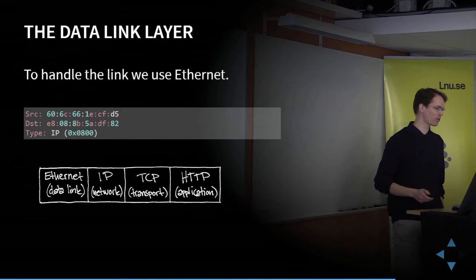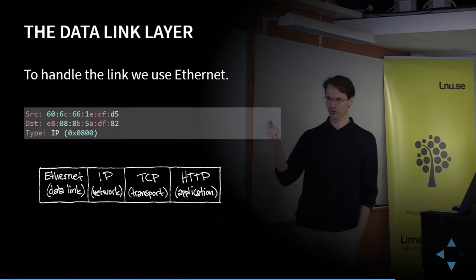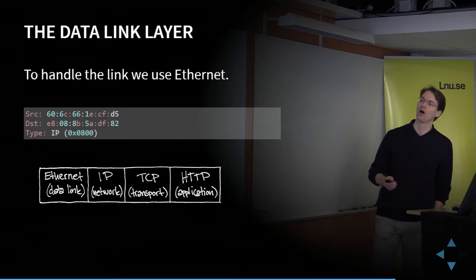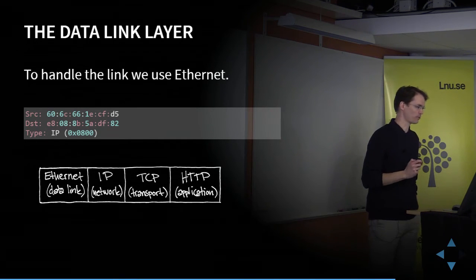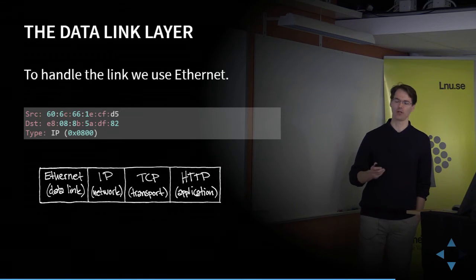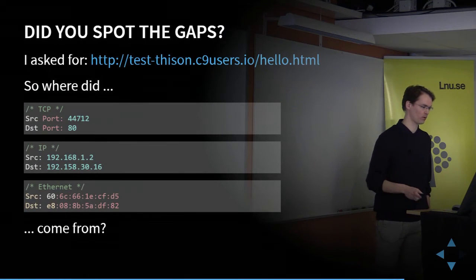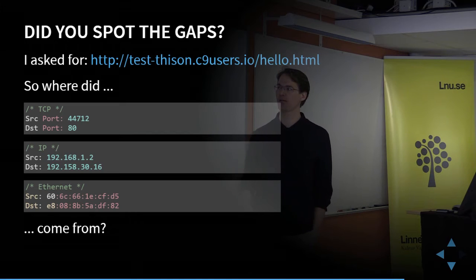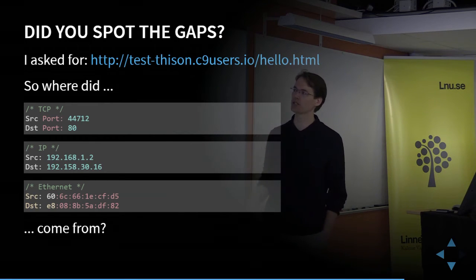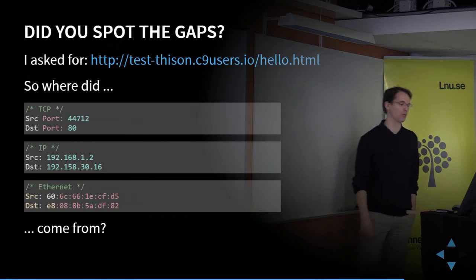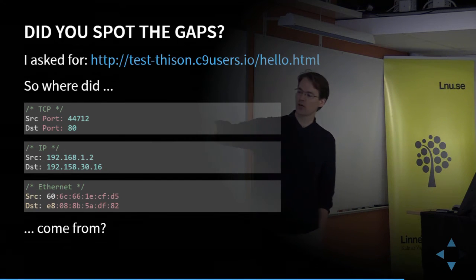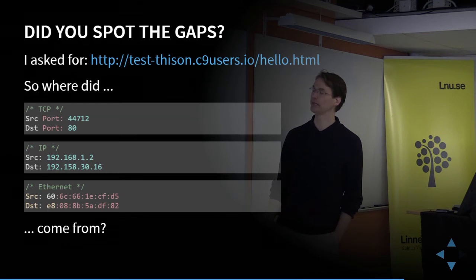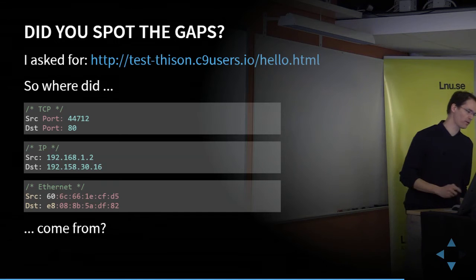Now the message is constructed and sent out onto the internet, hopefully reaching the web server and returning the HTML document. But how did all those numbers — IP addresses, ports, MAC addresses — appear? I only specified the URL. I never explicitly specified any of this, so where did all that information come from?